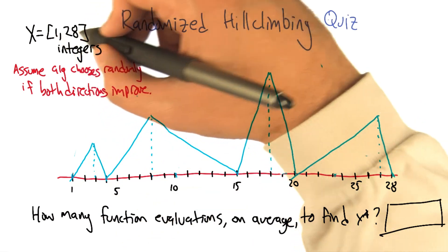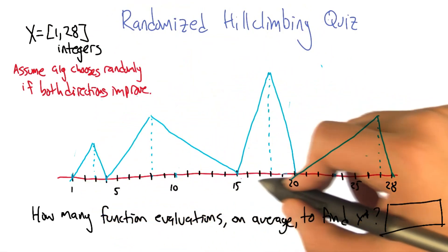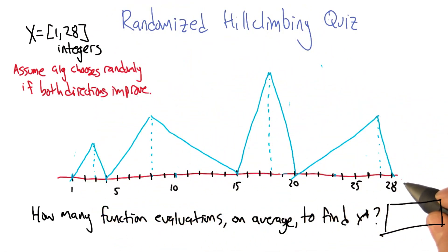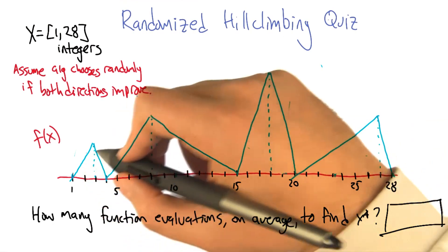We've got an input space of 1 to 28, the integers. And so here it is on the screen, all the values from 1 to 28. And here's the fitness function, or the objective function.